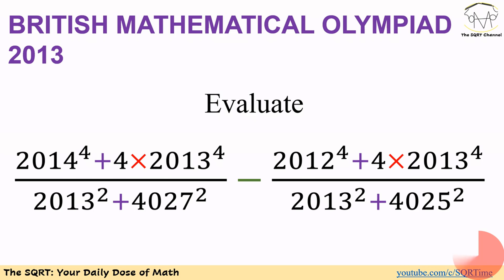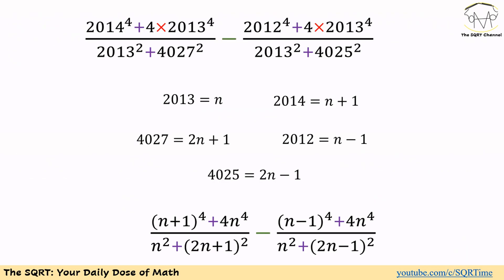Before moving forward to talk about the solution, make sure that you pause the video to think about this problem. To solve this problem we are going to start by using N for 2013. We want to simplify the whole expression using variables. If 2013 is N, then 2014 is going to be N plus 1.